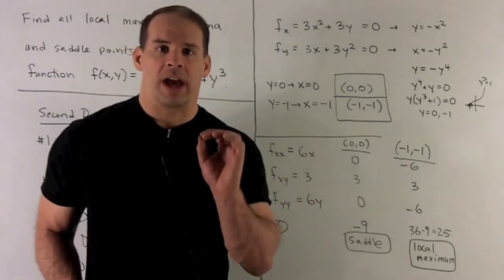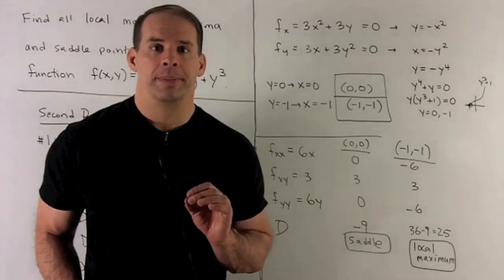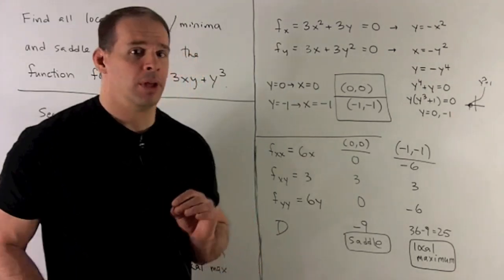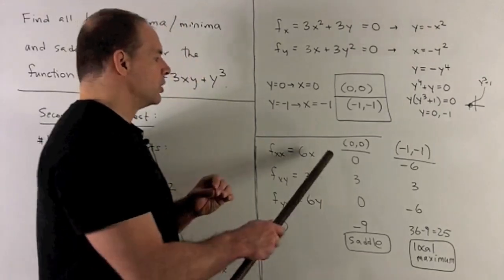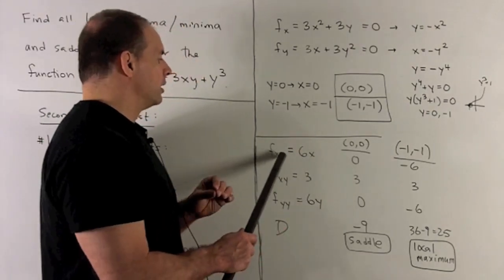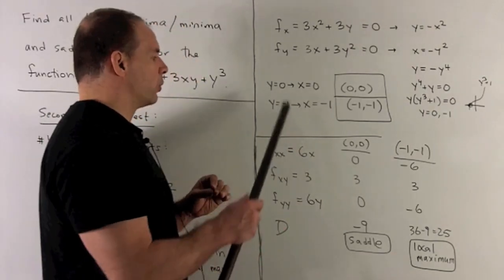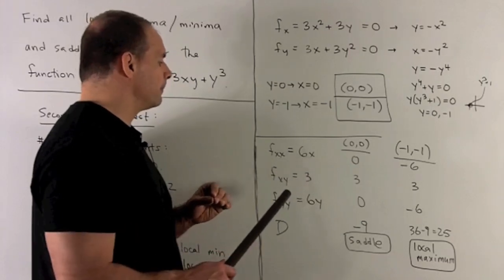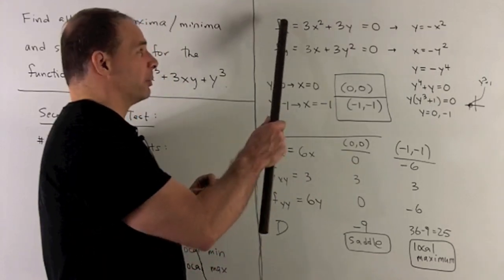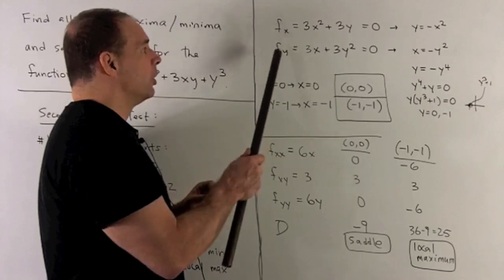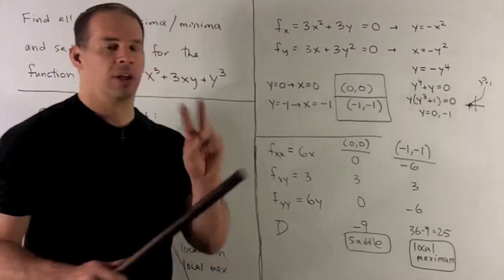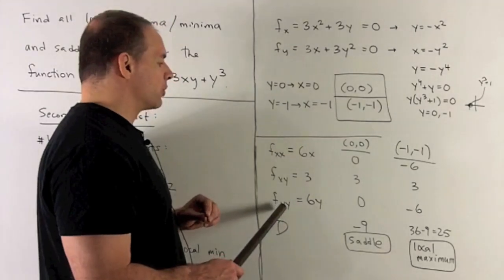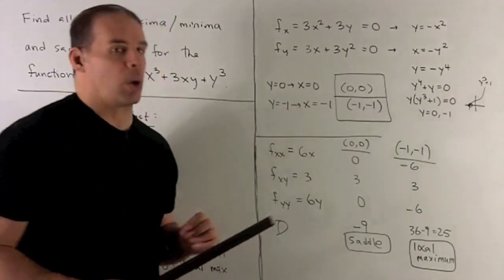Now, we need to check what kind of critical points are they. We'll need second partials to get the answer. If I take second partial with respect to x, we're going to get 6x. The mixed partial is just going to be 3. You can get it from either taking the partial of this one with respect to y or this one with respect to x. Then, second partial with respect to y is going to be 6y.